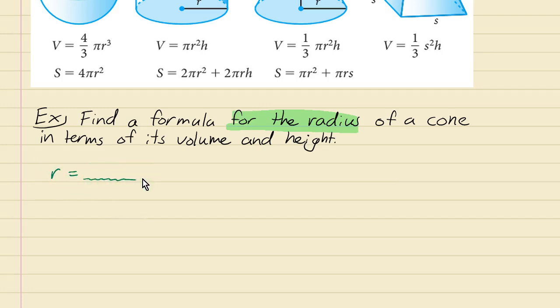And if it's in terms of its volume and height, then in terms of its volume and its height, that means the stuff over here will have V and h in it somehow. So anyways, we already have a formula for the volume in terms of the radius and the height. That's this one here, and we're gonna get r by itself on one side of that equation.